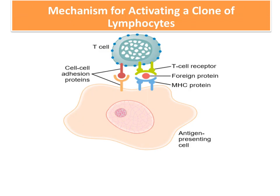This pictorial representation from the textbook shows that activation of the T cell requires interaction of the T cell receptor — shown in green — with the foreign antigen presented on the surface of the APC, in combination with the MHC protein shown in blue. There is also a cell-to-cell adhesion protein that keeps the T cell and APC bound together.